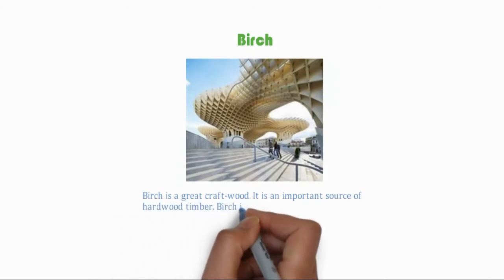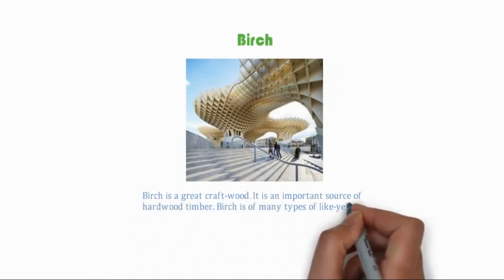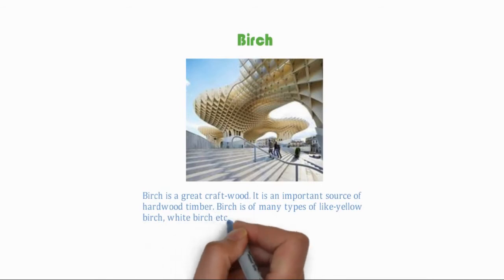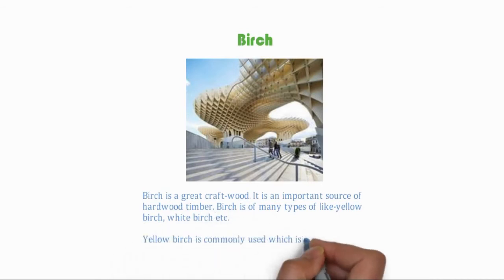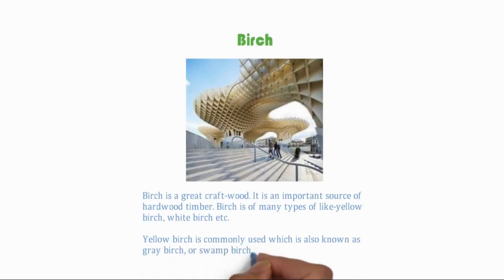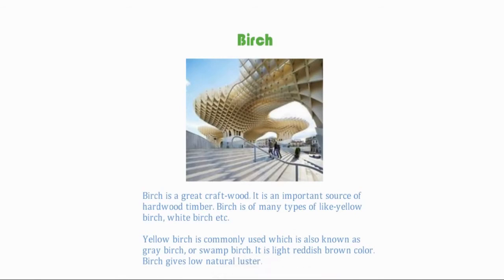Birch is a great craft wood and an important source of hardwood timber. There are many types of birches, such as yellow birch and white birch. Yellow birch, also known as gray birch or swamp birch, is commonly used. It is light reddish brown in color and gives low natural luster.